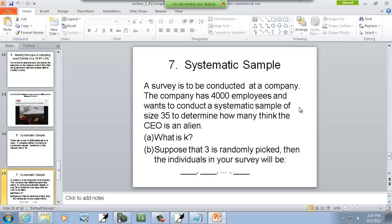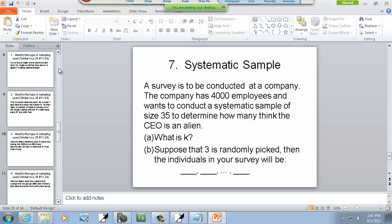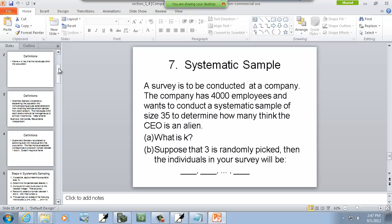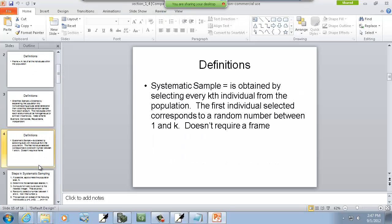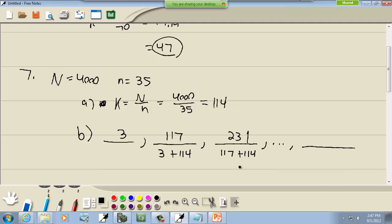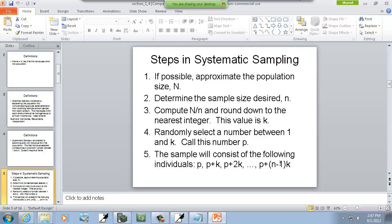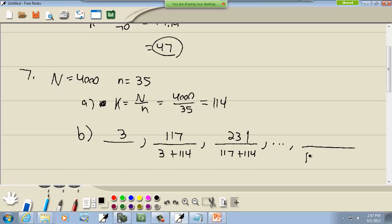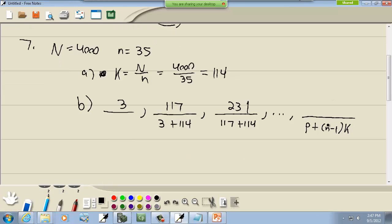This is given by a formula. If I scroll up here. See, this is P, P plus K, P plus 2K. So we just keep adding K over and over. This last one is going to be P plus N minus 1 times K. Okay. So let's use that to figure out what this should be. Now P is our starting value. So this one's P.